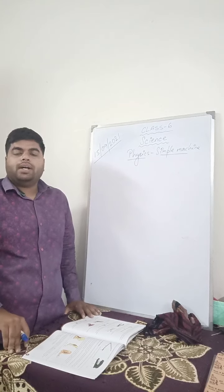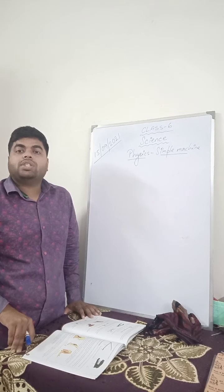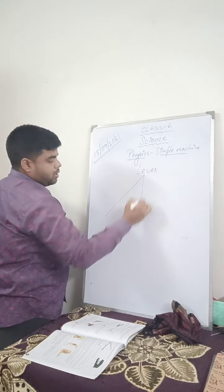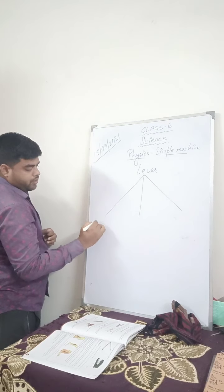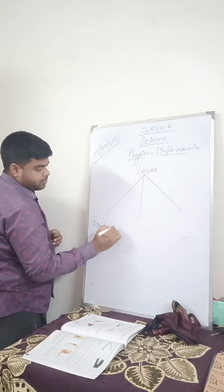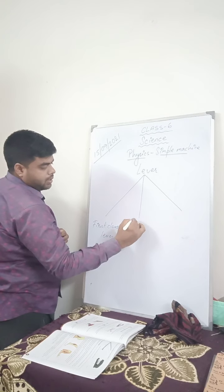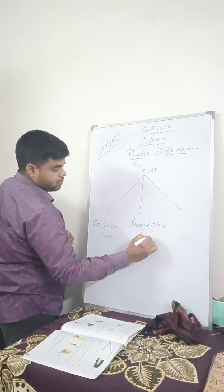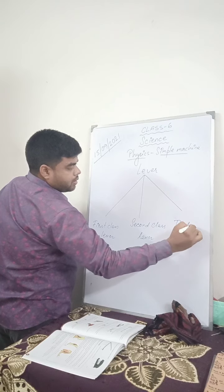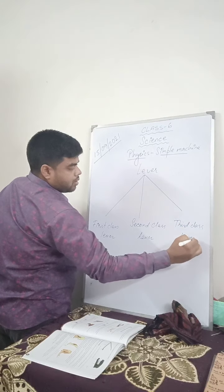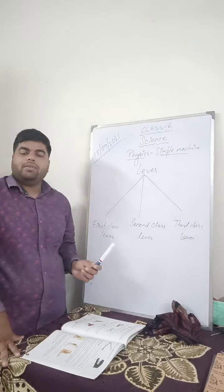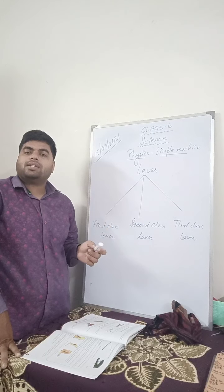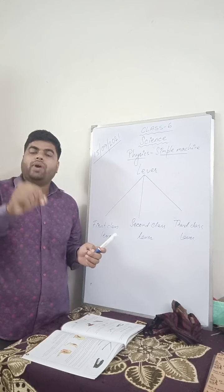In the last class, I mentioned that the lever is divided into 3 categories. You have studied about the lever, and it is divided into 3 categories: first class lever, second class lever, and third class lever. These are categorized on the basis of where the fulcrum is present.